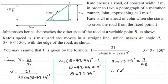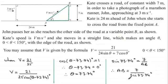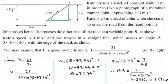Rearranging for AB: multiplying both sides by AB gives AB times sin(73.74) equals 7, and dividing both sides by sin(73.74) gives AB equals 7 divided by sin(73.74 degrees). Working this out gives 7.2916..., which rounded to two decimal places is 7.29 meters.